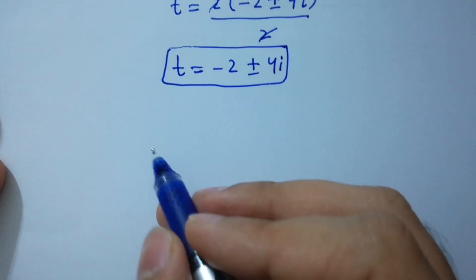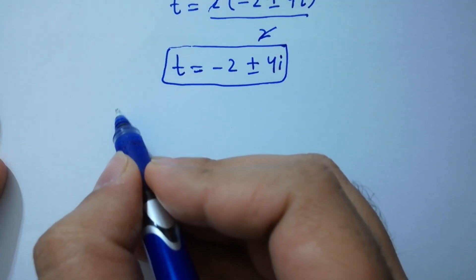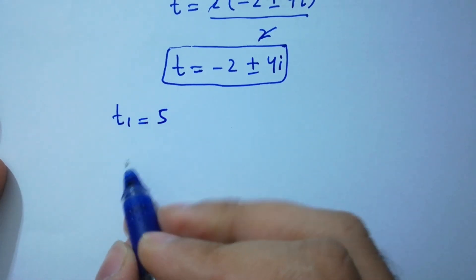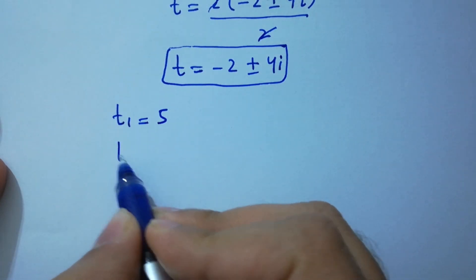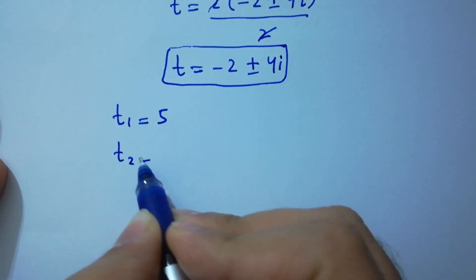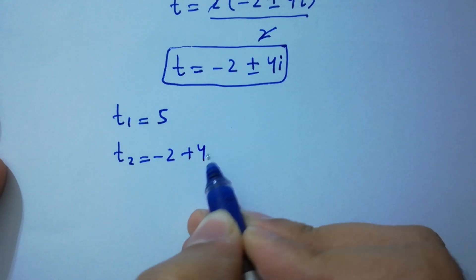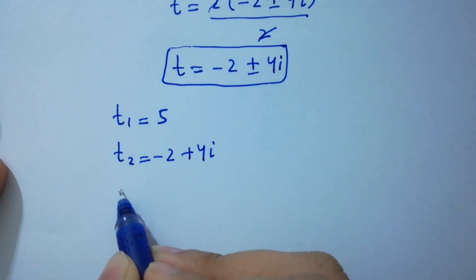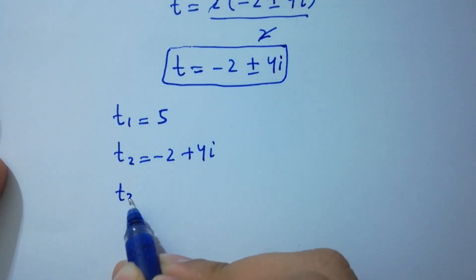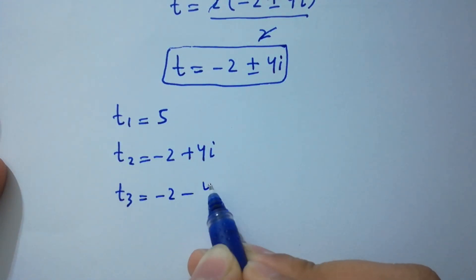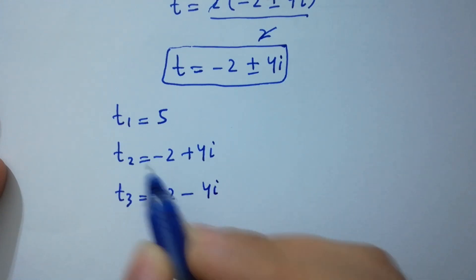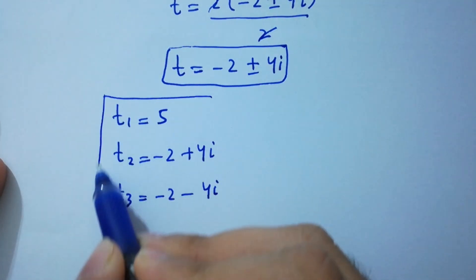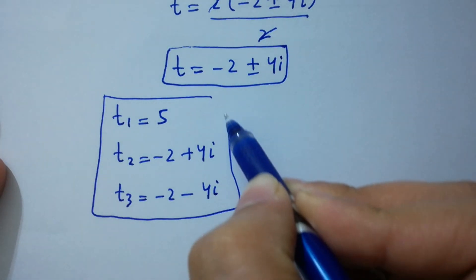So we have three solutions: t1 equals 5, t2 equals minus 2 plus 4i, and t3 equals minus 2 minus 4i.